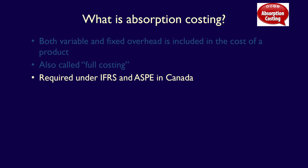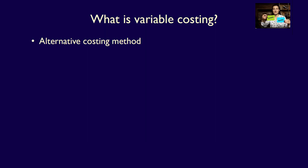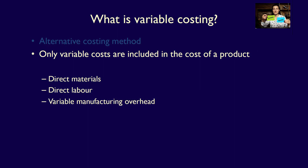It should be noted that absorption costing is not the only costing method. An alternative costing method is variable costing. Under variable costing, only variable costs are considered appropriate product costs — inventoriable — including direct materials, direct labor, and variable manufacturing overhead.